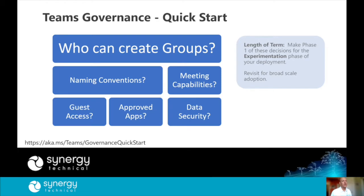Microsoft has a quick start guide walking through the top items to consider as you roll out Teams. For example: who do we allow to create teams and Office 365 groups? Do we need naming policies? Are we concerned about meeting features and do we need to lock any down? Are we using guest access and do we need to modify it at a global level or within individual teams? Do we need to lock down any apps? And do we need to enable things like DLP or MFA for guest users? These are decisions to make during the Experiment phase.